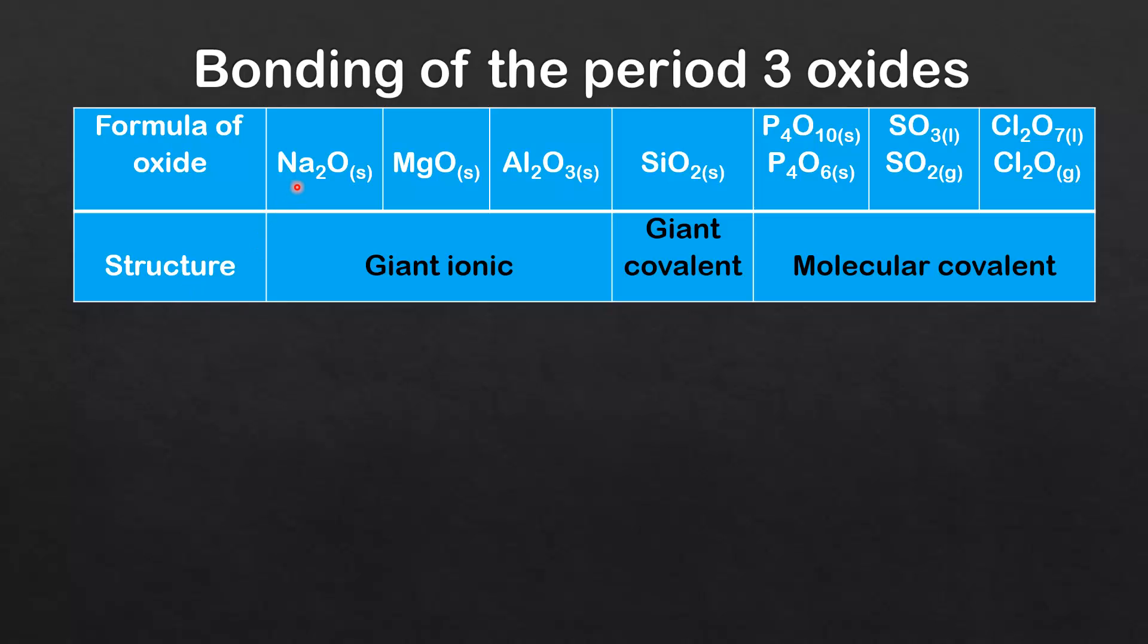The oxides of the metallic elements sodium, magnesium, and aluminium have giant ionic structures.